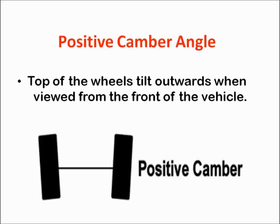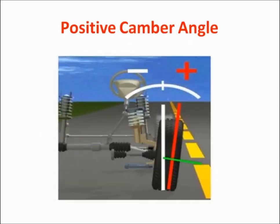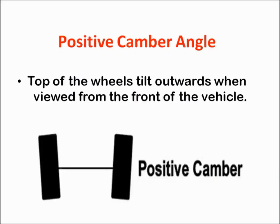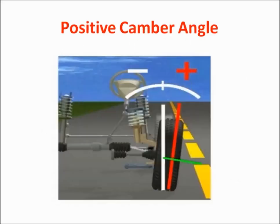Camber might be positive, negative, or zero. In this slide we will understand what is positive camber. As you can see in this image, when the top of the wheel tilts outwards when viewed from the front of the vehicle, then the camber is positive camber. Here the top side of the wheel is tilted outwards.